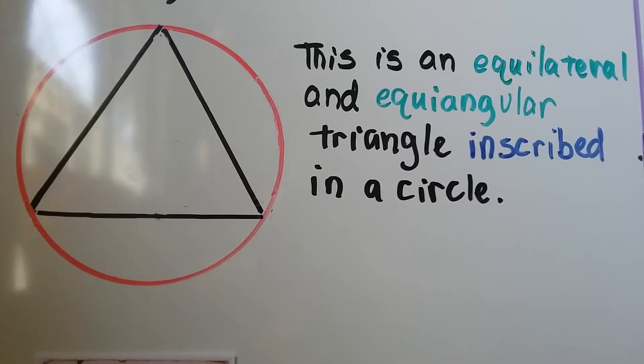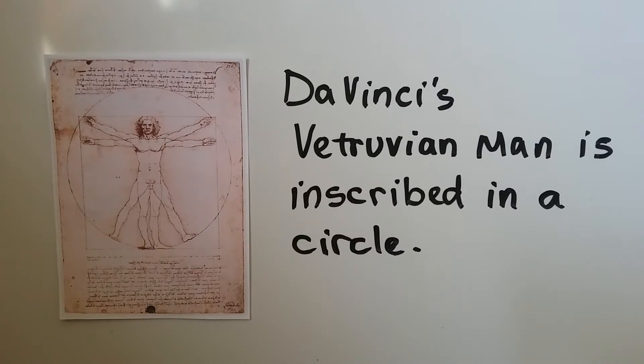This is an equilateral and equiangular triangle inscribed in a circle. Some of you may be familiar with da Vinci's Vitruvian Man. He's inscribed in a circle.